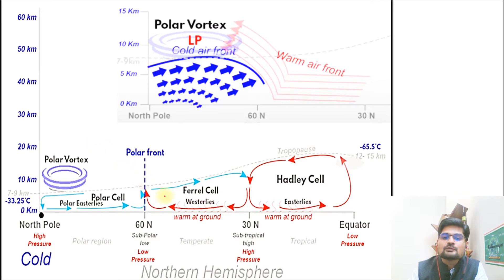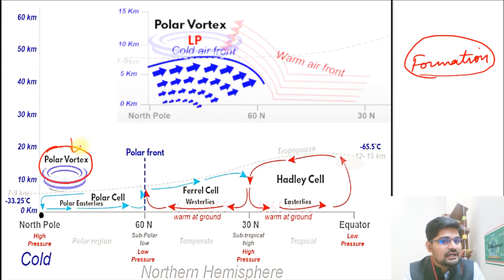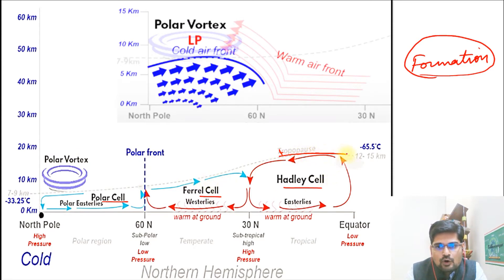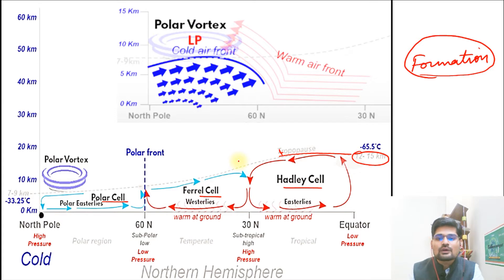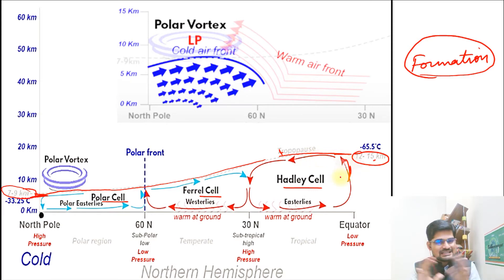Let's discuss the conceptualization and formation. Many people get confused about how a low pressure system is formed in the polar areas. We have already discussed the Hadley cell, Ferrel cell, and polar cell. A simple circulation model is on screen. The line called the tropopause is at about 12 to 15 kilometers, and it is the dividing line between the troposphere and the stratosphere. This height keeps going down as we go towards the pole — at the pole, the tropopause is about 8 kilometers, while at the equatorial region it is maximum about 15 kilometers.